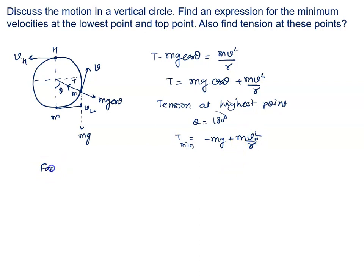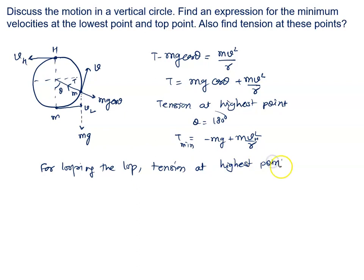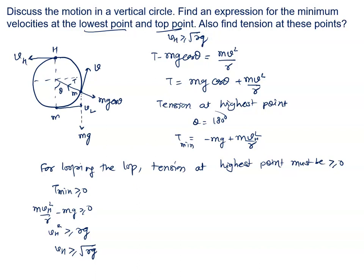Now, what is the tension at the highest point? At the highest point, theta equals 180 degrees, and let the velocity at this point be Vh. So the tension at the highest point is given by: T = Mg cos 180° + MVh²/R = −Mg + MVh²/R. As the body goes higher, tension decreases, so this is the minimum tension point.